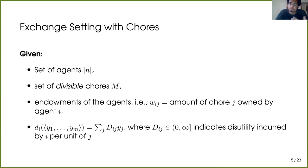Throughout the talk we make the assumption of linearity for disutility functions. If an agent is given chore amounts y_1, y_2, ..., y_m, the disutility incurred is the summation of d_ij * y_j, where d_ij indicates the disutility incurred by agent i per unit of chore j. We also permit d_ij to equal infinity, which signifies that agent i cannot be allocated chore j because she does not have the required skills to do it.